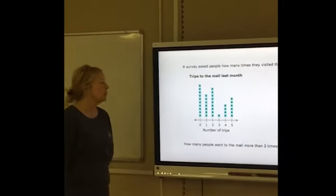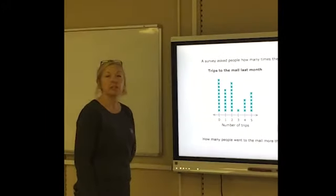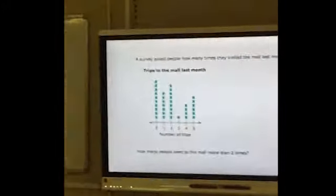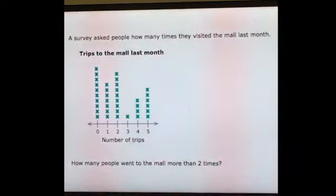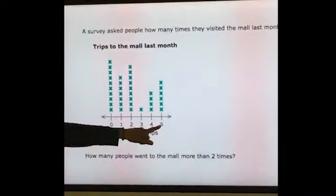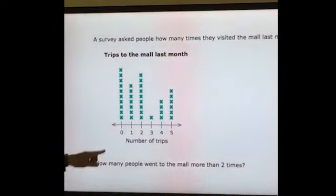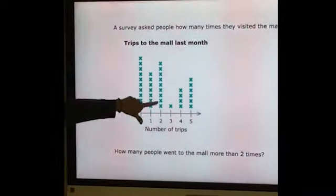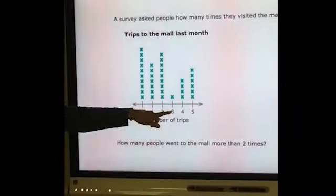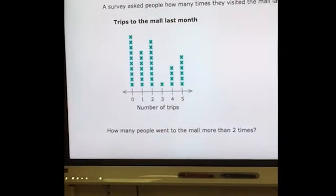And for our last problem, I want you to answer this. If you get the answer for this, you can leave it in the comments section. But it says a survey asked people how many times they visited the mall last month. So here's their number of trips to the mall, and these again represent the people. This many people went zero times. This many people went one time to the mall. This many people went twice. One person went three times. This many people went four, and this many people went five.